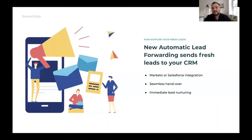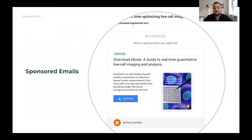As we know in digital marketing, freshness is the name of the game when it comes to lead generation campaigns. With new automatic lead forwarding software, you can send your leads directly from ResearchGate to your Marketo or Salesforce CRM, enabling a seamless handover to start immediate lead nurturing to help your campaigns be more successful. We also will continue to offer our sponsored email products, which allows you to target scientists directly in their inbox with your message off the ResearchGate platform.